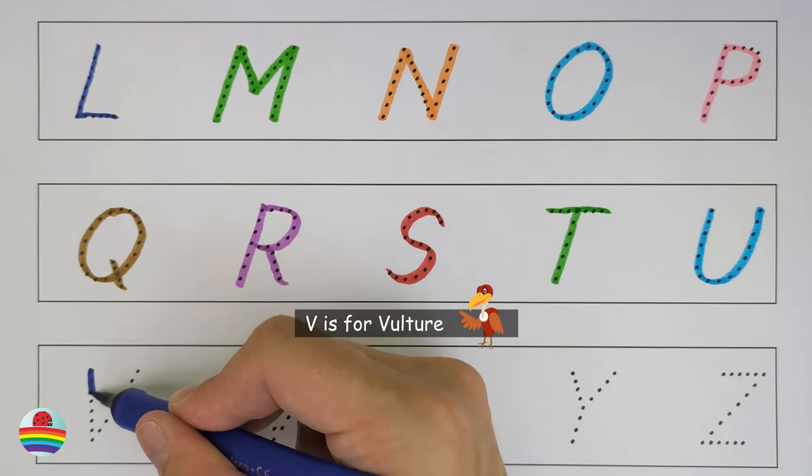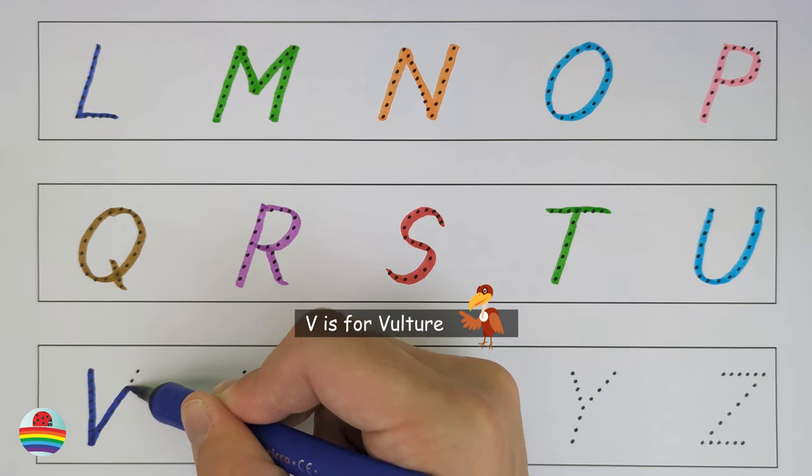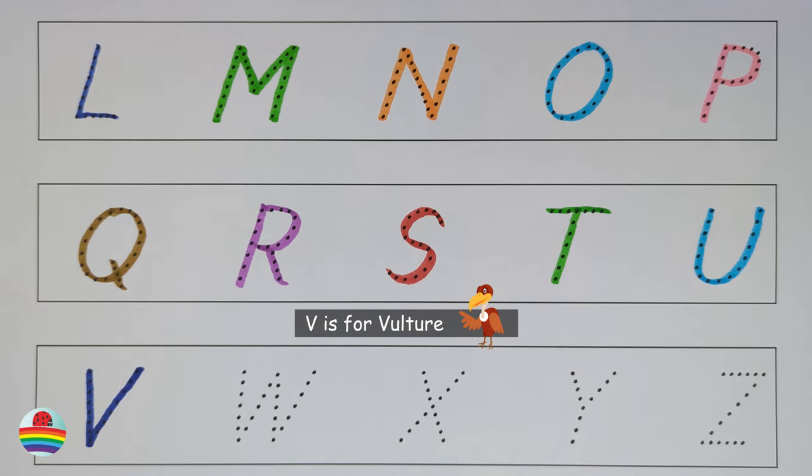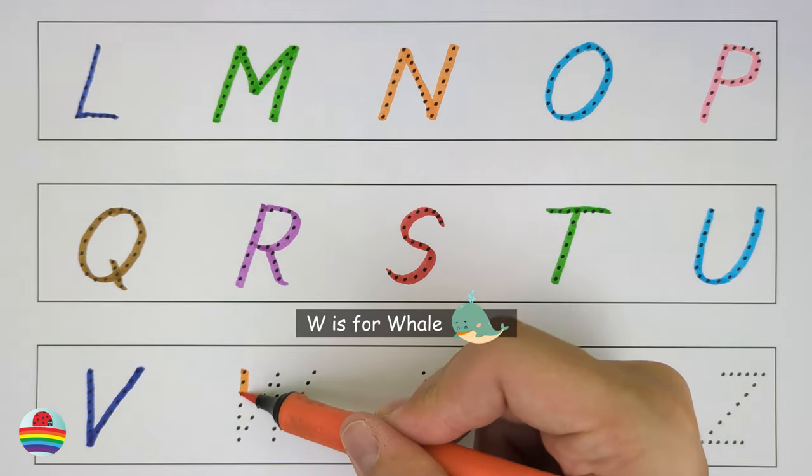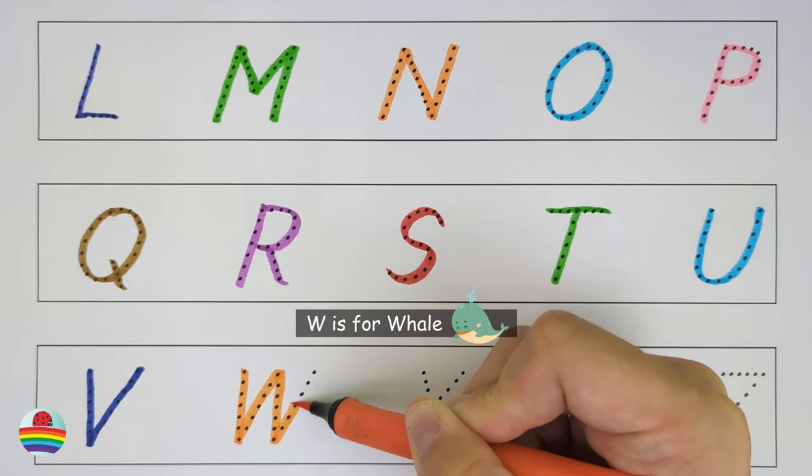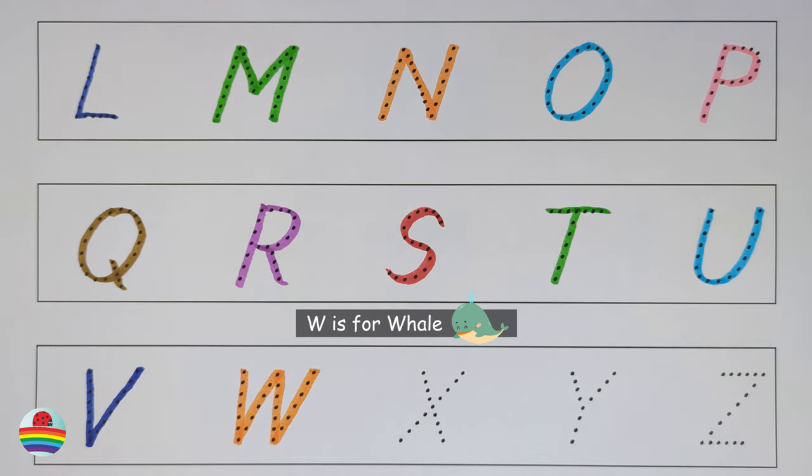V. V is for Vulture. V. W. W is for Whale. W.